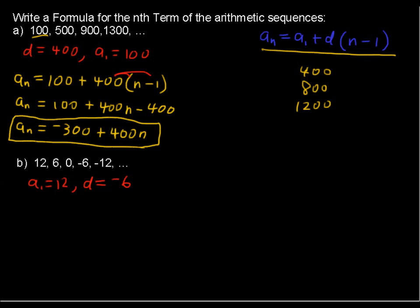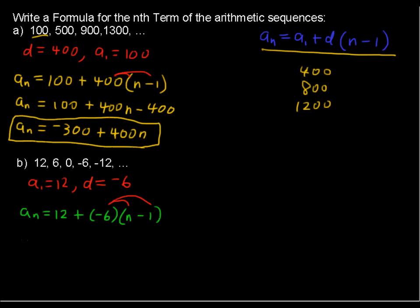Now we have the information and we can plug it into the standard form. A sub n equals the first term plus the difference of negative 6 times n minus 1. The form stays the same even with a negative difference. Distributing negative 6, we get a sub n equals 12 minus 6n plus 6, since negative 6 times negative 1 is positive 6.